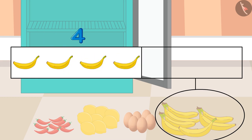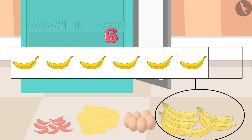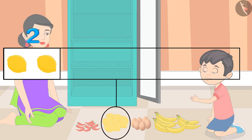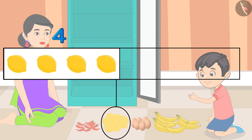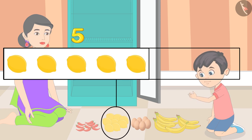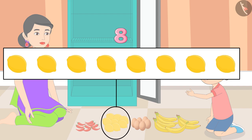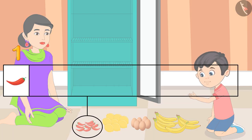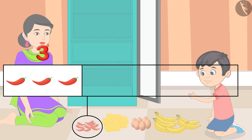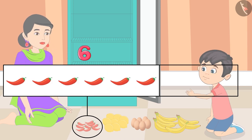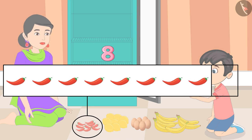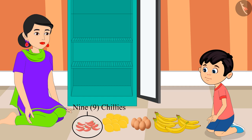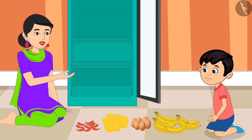One, two, three, four, five, six, seven, and eight — these are eight lemons. One, two, three, four, five, six, seven, eight, and nine — these are nine chilies.